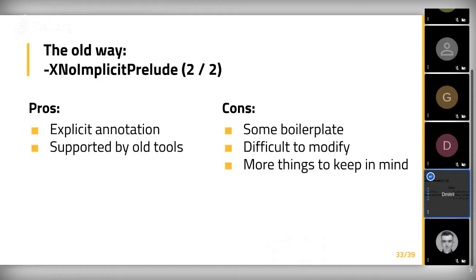The cons of this approach are that it involves some boilerplate — in each module you need to write two lines, though you can put the language extension in default-extensions in your Cabal file. It's also difficult to modify the Prelude because if you want to hide one single function, you need to modify each module with a hiding annotation. Every time you create a new Haskell module, you need to remember to write those lines; otherwise you'll see weird error messages. You need to keep more things in your head.